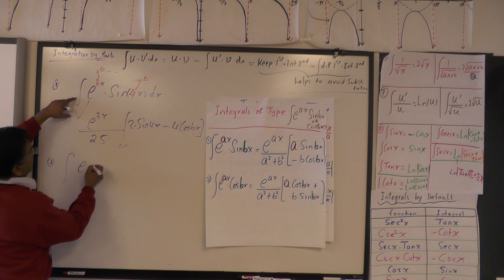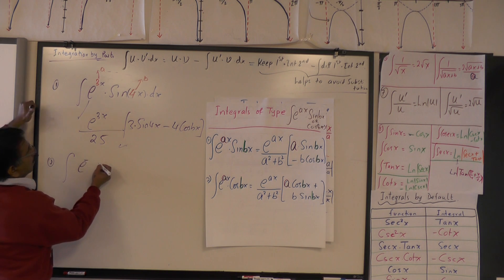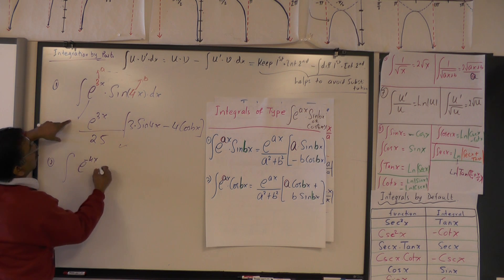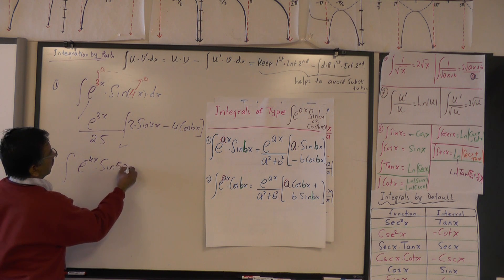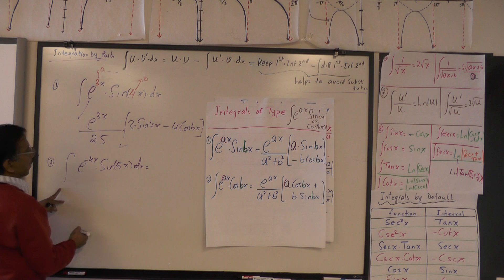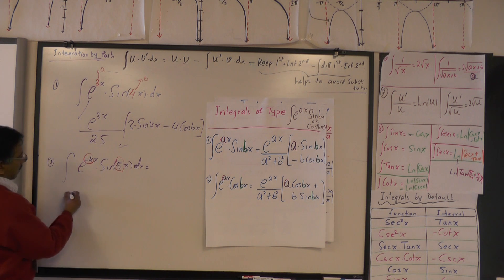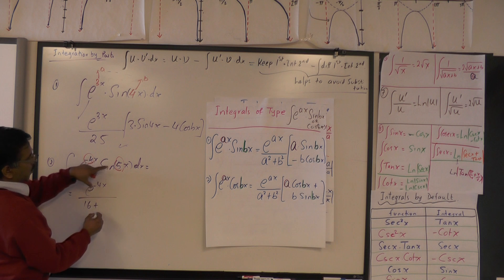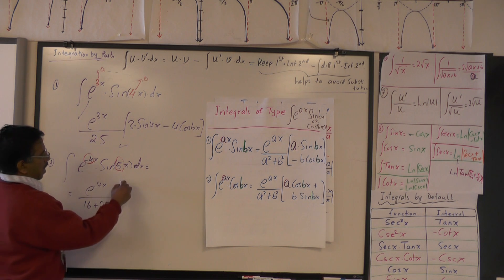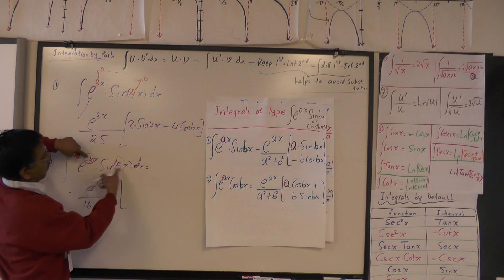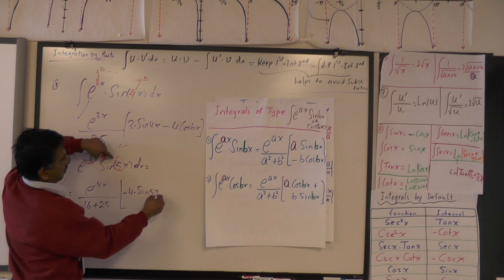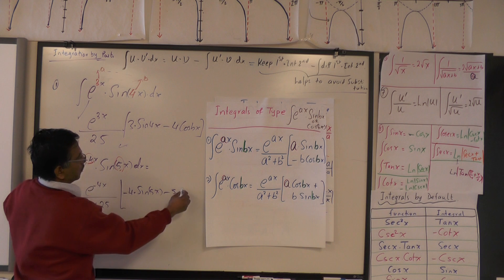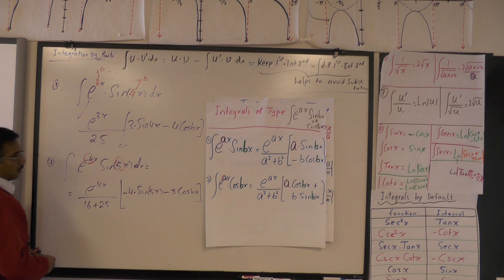One more example: integral of e raised to minus 4x times sine of 5x. So here a equals negative 4 and b equals 5. The answer: e raised to minus 4x, divided by a squared plus b squared which is 16 plus 25 equals 41. Times the bracket: a times sine of 5x — so negative 4 times sine of 5x — minus b times cos: minus 5 times cos 5x, all over 41.